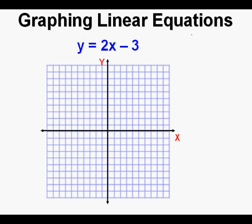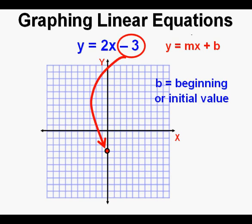Let's look at an equation in slope-intercept form, where the y variable is by itself on one side of the equation. This is y equals 2x minus 3. The slope-intercept form is y equals mx plus b, where m is the slope and b is the y-intercept. I like to think of m as climbing and b as the beginning at the y-intercept.